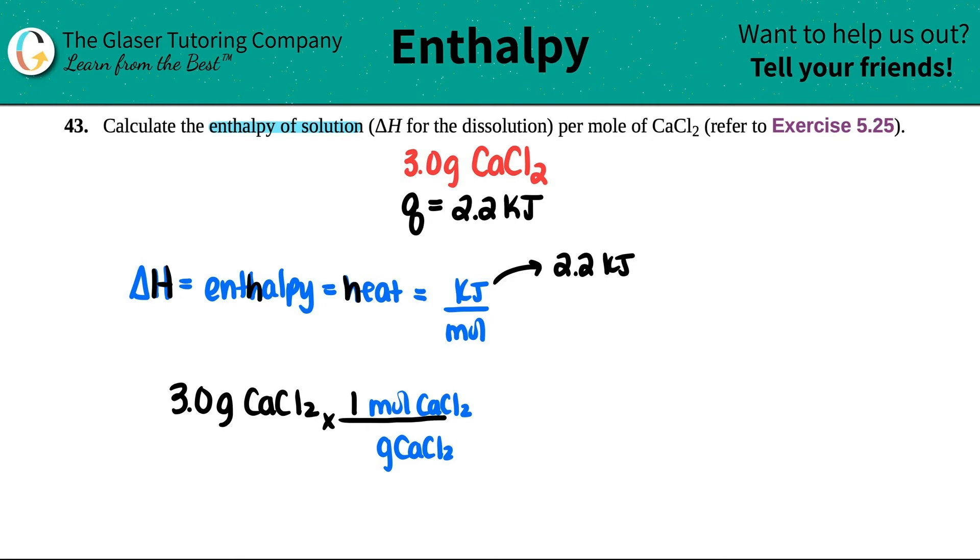So calcium, 40.08. And then I got two chlorines. So three divided by that number, and I get 0.270 moles of the calcium chloride, CaCl2. So that's this number.